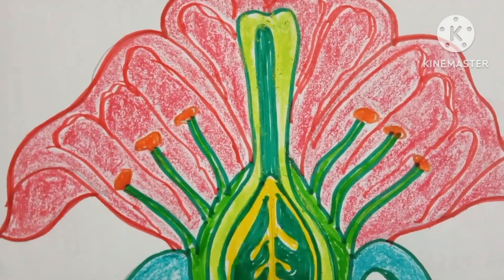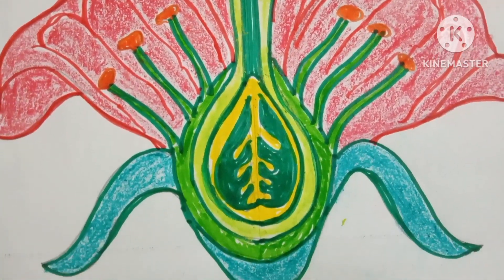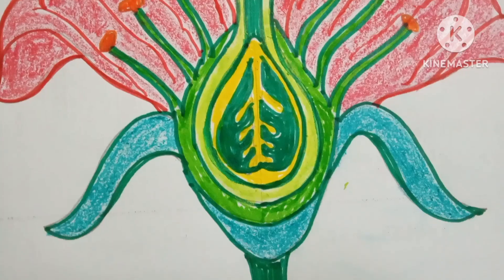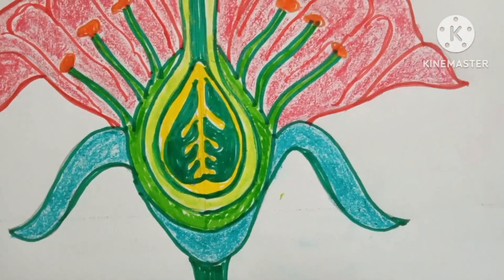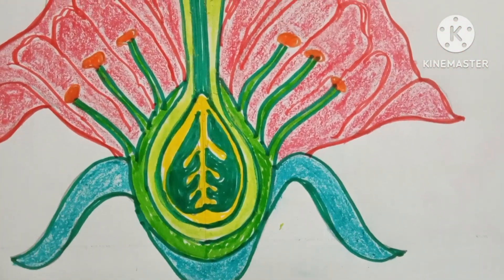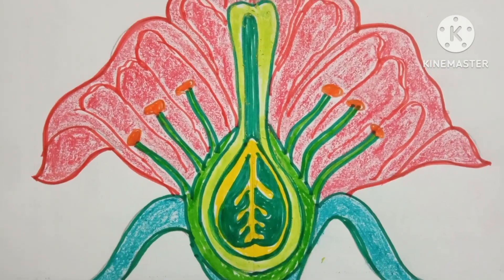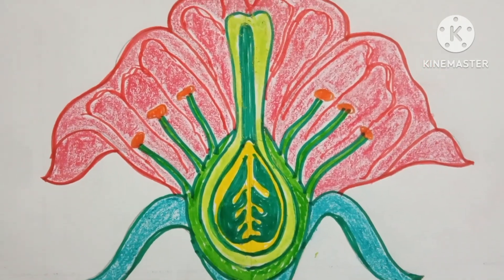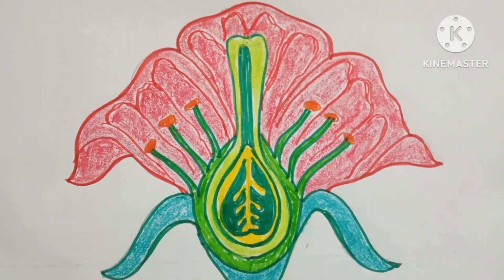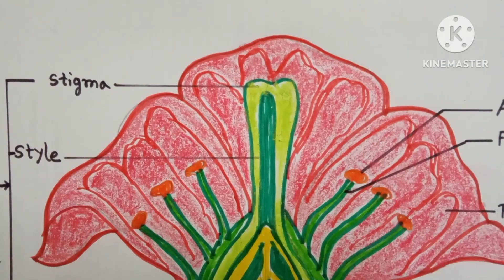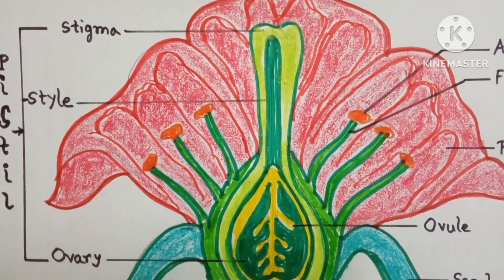So, students, the scientific diagram of the section of a flower is ready now. But don't forget to do the perfect labeling of any scientific diagram to get good marks in biology.